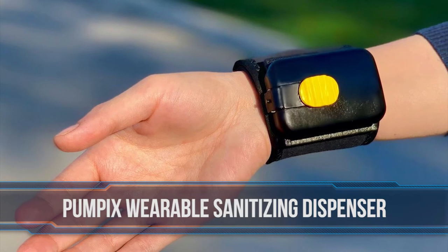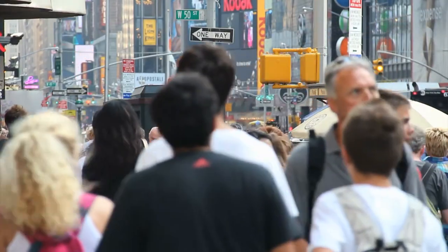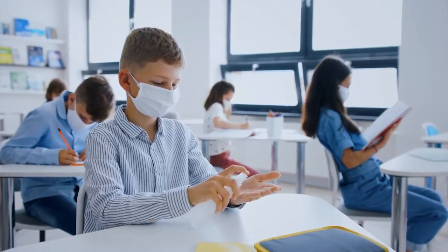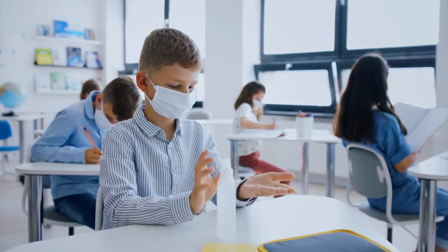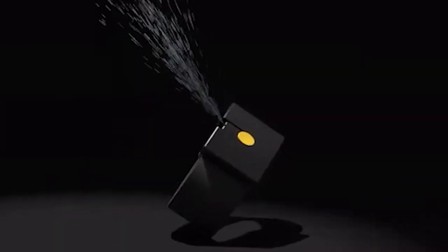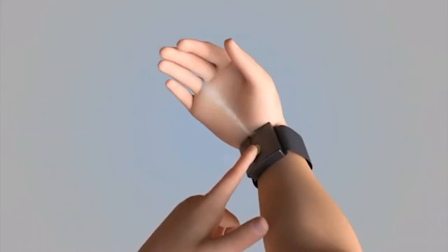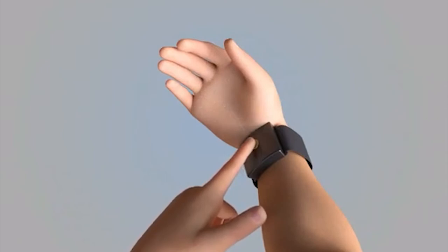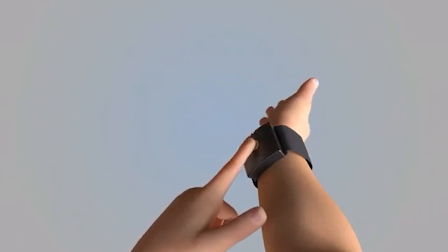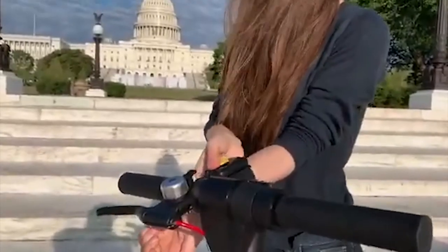Number four, Pumpix wearable sanitizing dispenser. We are all connected. Never has that been more apparent than now. Even when we're separate, we're together in our efforts. Because of the current pandemic, we now have a greater responsibility to protect each other. After touching the elevator button, a grimy door handle at a supermarket, or your phone's touch screen, clean those nasty germs with Pumpix. The Pumpix backwards sliding button activates the inner chamber with one pump, releasing just the right amount of sanitizing mist to rub on both hands from front to back and between fingers.